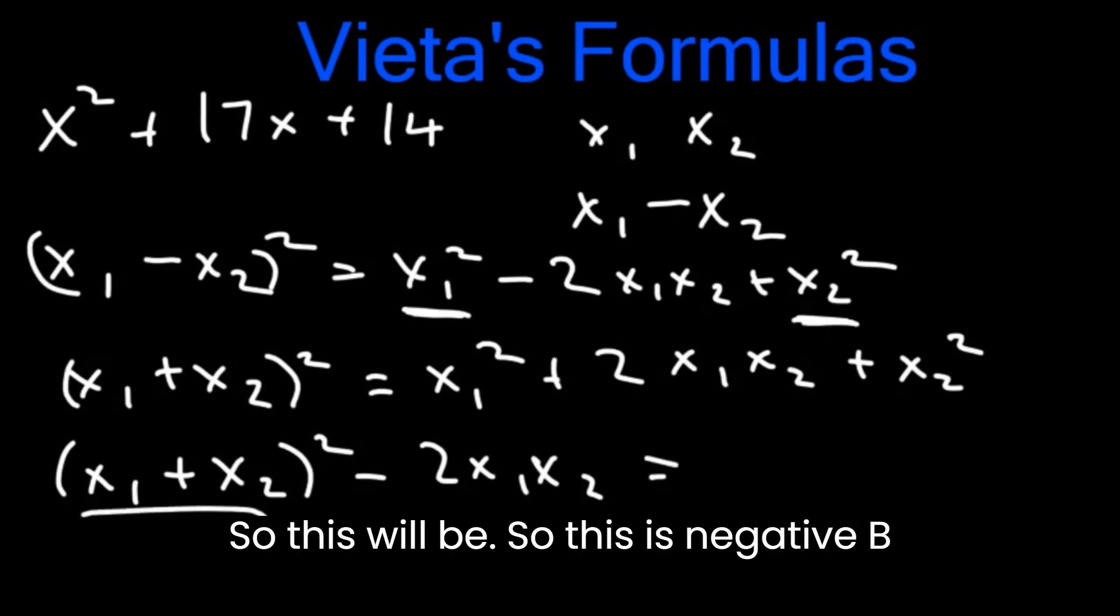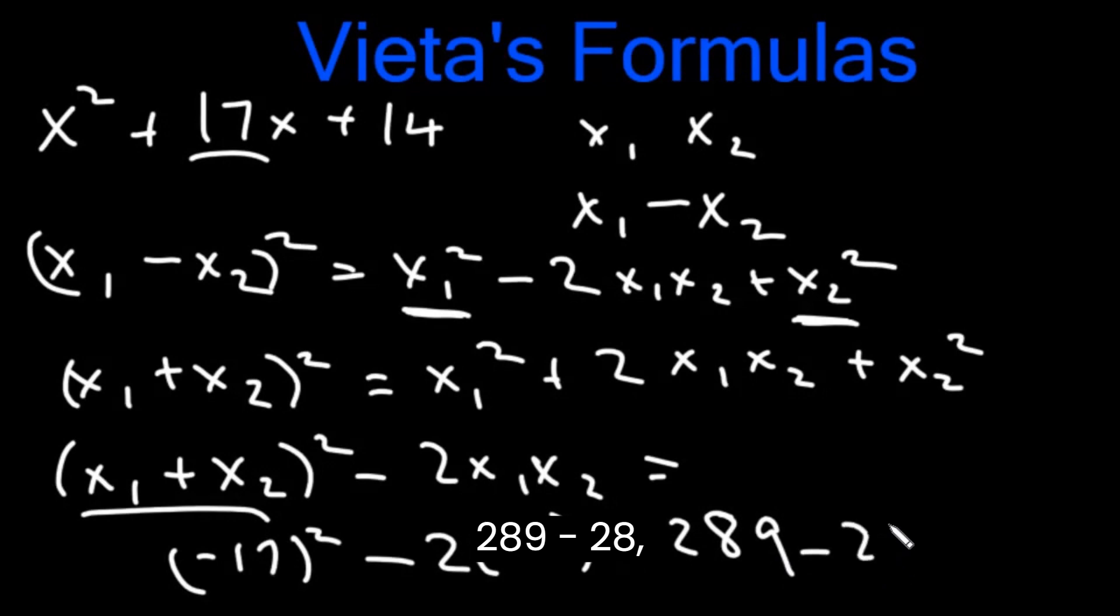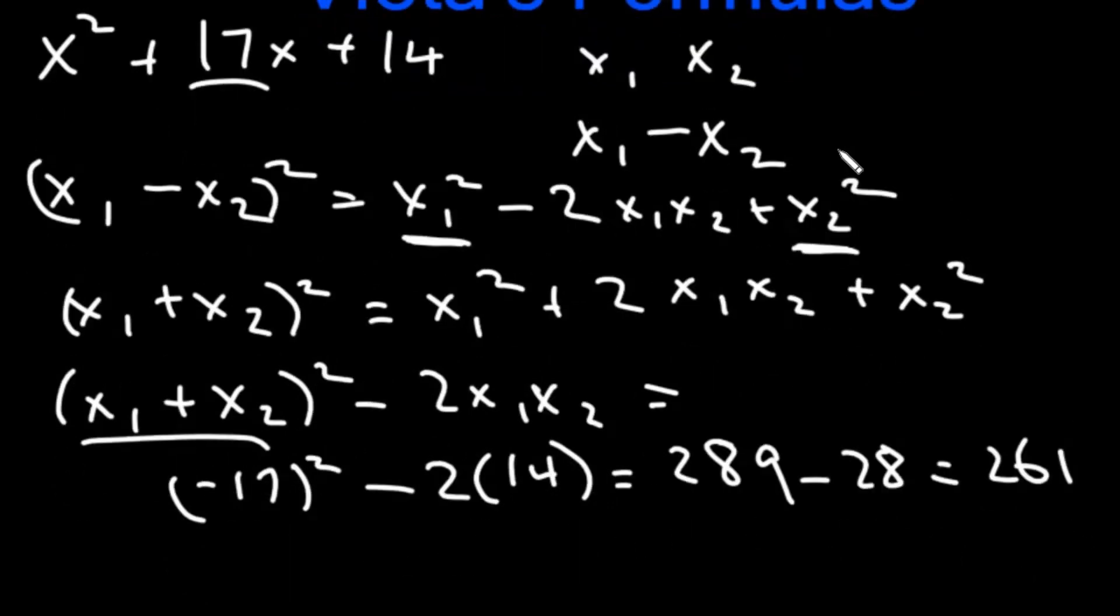This will be, this is negative b by a. So that's negative 17 minus 2 times c by a, so that's 14. This is 289 minus 28 which is 261. Now we know x1 square plus x2 square is 261.